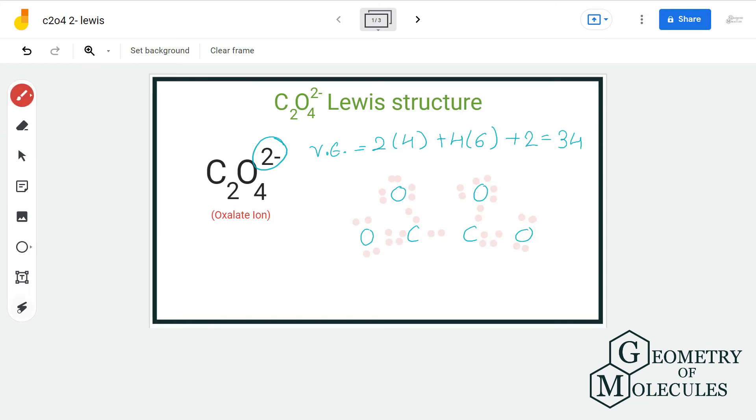Now this will result in the formation of double bond. Also, C2O4 2- ion is an ion so we will enclose it within a bracket.